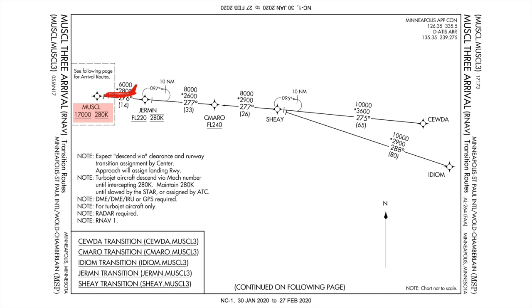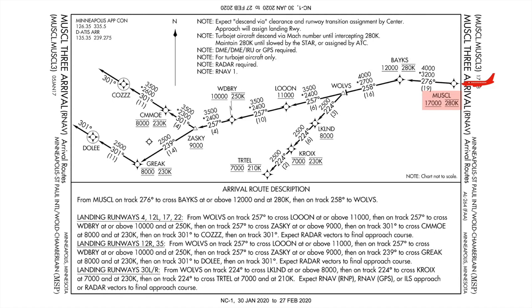Always expect that descend via clearance with a runway transition. The next point after that is Muscle, at or above 17,000 and at 280 knots. This is where we go over from the transition chart to the arrival chart. On the arrival chart now: 17,000 at or above and 280. Bakes is at or above 12,000 and 280 knots — you have to be above 12,000 there and above 17,000 at the previous point. You let your computer system manage that descent on the arrival.